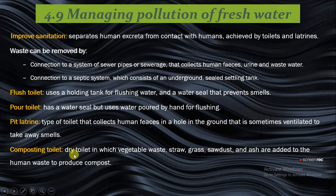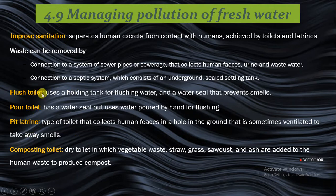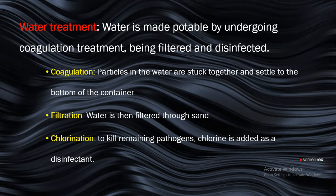Then we have a composting toilet, which is a dry toilet in which vegetable waste, straws, grass, sawdust, and ash are added to the human waste to produce what is known as compost — that's why it's called a composting toilet. These are the four major types of toilet, and their major function is to separate human excreta from contact with humans, which is one way to prevent pollution of fresh water.